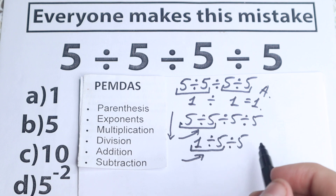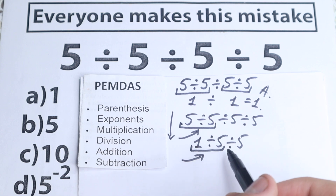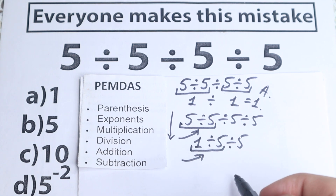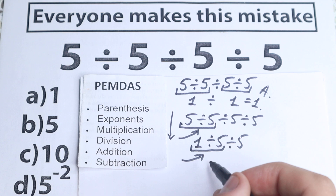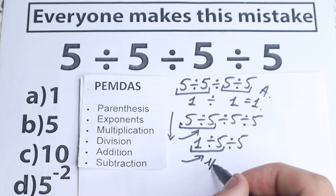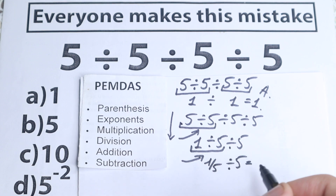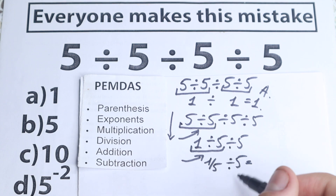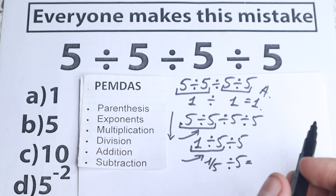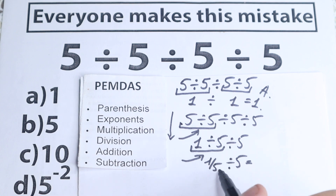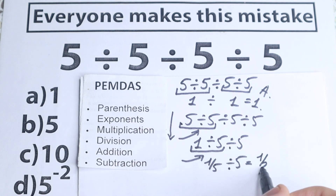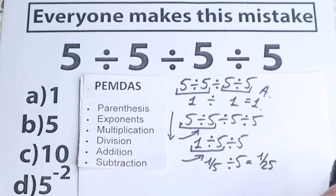1 divided by 5 — we can write it as a fraction: 1 over 5. Then we have one final step: division by 5, which equals 1 over 5 divided by 5. In algebra, this is like 1/5 times 1/5, which equals 1 over 25. And this is our solution according to PMDMC.